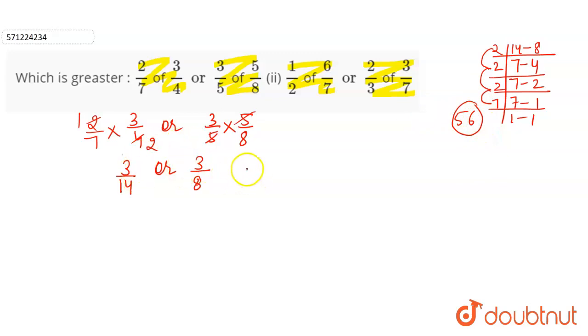For both the fractions, we have to make the denominator equal to 56. So 3 by 14, and 14 into 4 is 56. So we have to multiply the fraction by 4. So 3 into 4 is 12, 4 into 14 into 4 is 56.